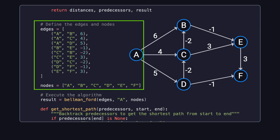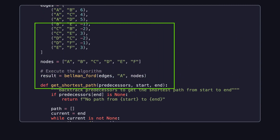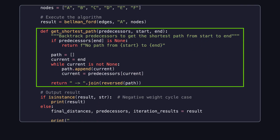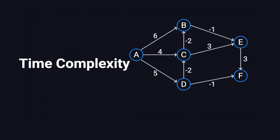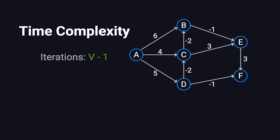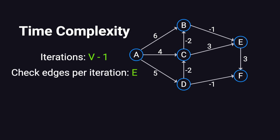Here, we define the nodes and edges based on the graph discussed earlier. A helper method backtracks through the predecessor dictionary, allowing us to reconstruct the shortest path from the source node to any destination. The time complexity of the Bellman-Ford algorithm is O(V × E), since the algorithm performs V minus 1 iterations and checks all E edges in each. For sparse graphs with fewer edges, this complexity is typically manageable.